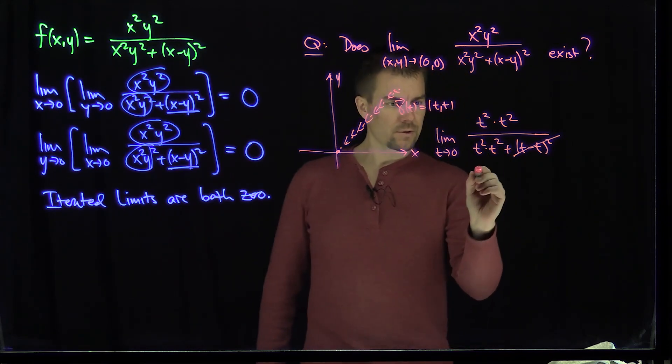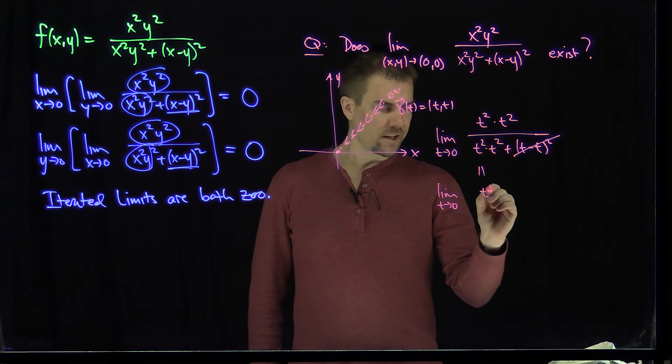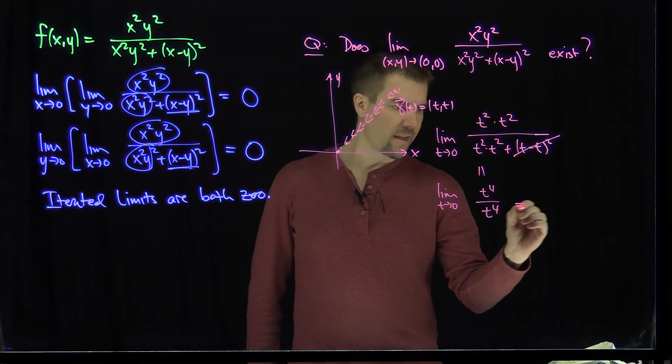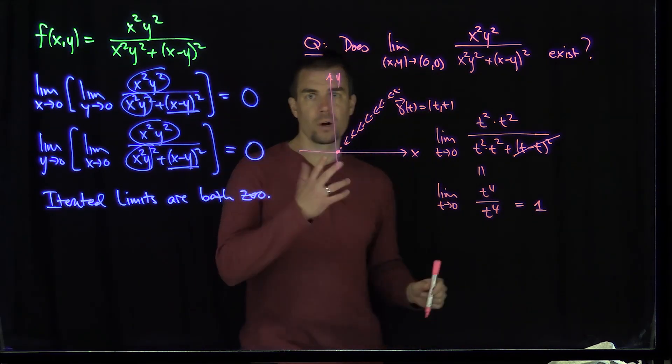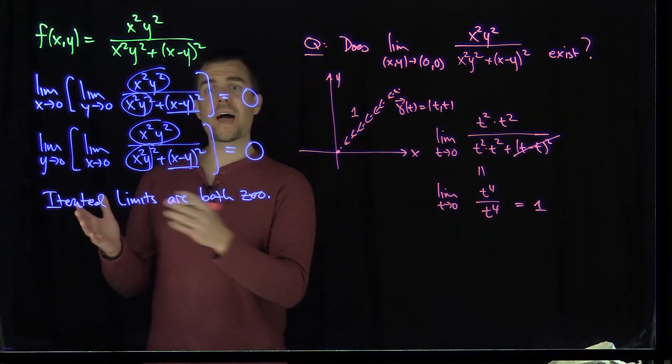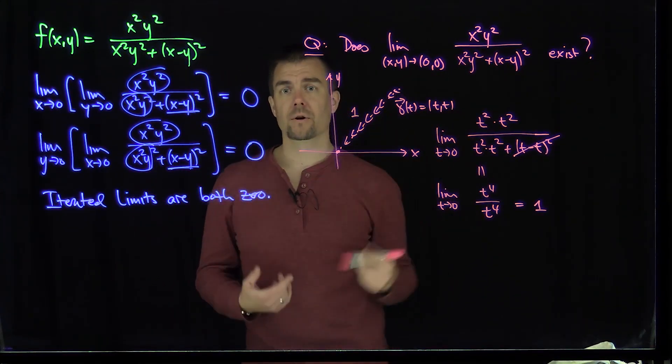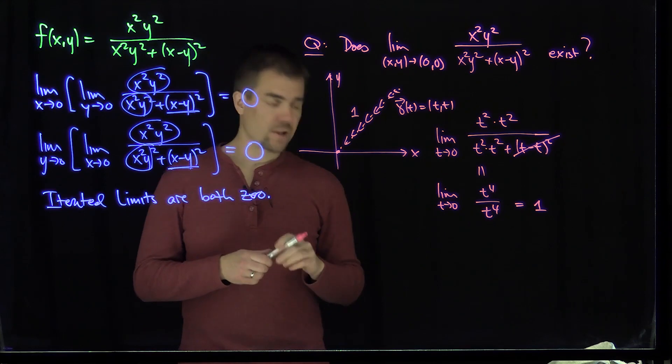So I have t to the fourth over t to the fourth. So this is nothing more than the limit as t goes to zero of t to the fourth over t to the fourth, and that limit is equal to one. So the limit along this straight line over here is equal to one, and that shows that the limit doesn't exist. Along the axes, the limit is tending to zero, but along this trajectory, this linear trajectory that goes to the origin, the limit is equal to one.